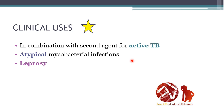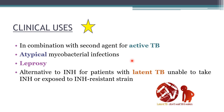Rifampin can also be used as an alternative to isoniazid for patients with latent tuberculosis who are unable to take isoniazid or who are exposed to an isoniazid-resistant strain. The dose of rifampin is 10 mg/kg/day given for six months. Isoniazid is always the first choice for latent tuberculosis, but rifampin is the alternative. It is also used for atypical mycobacterial infections and leprosy.